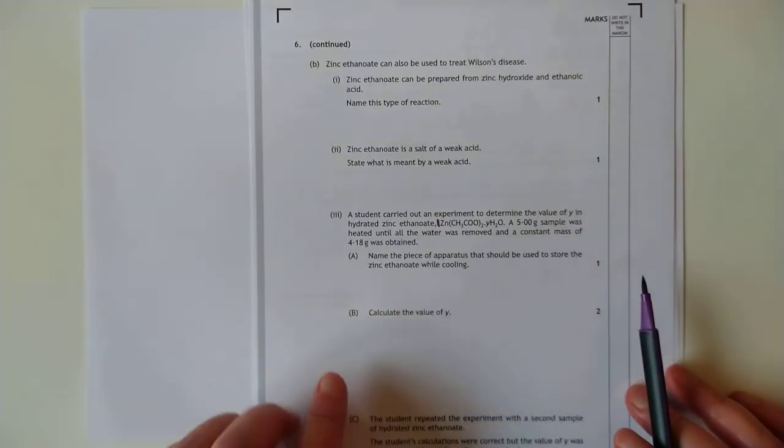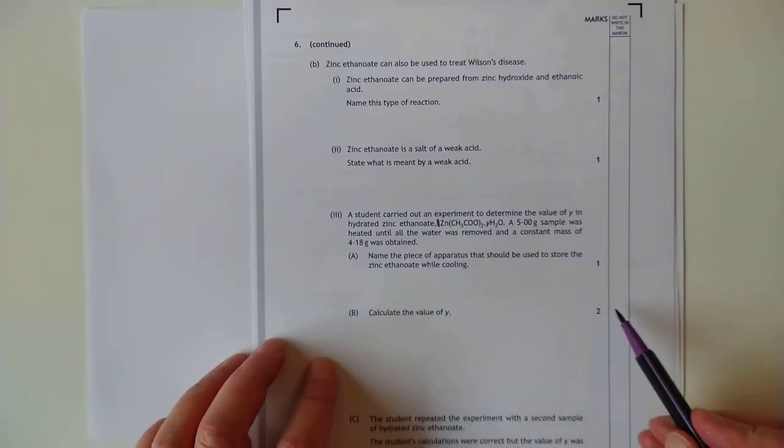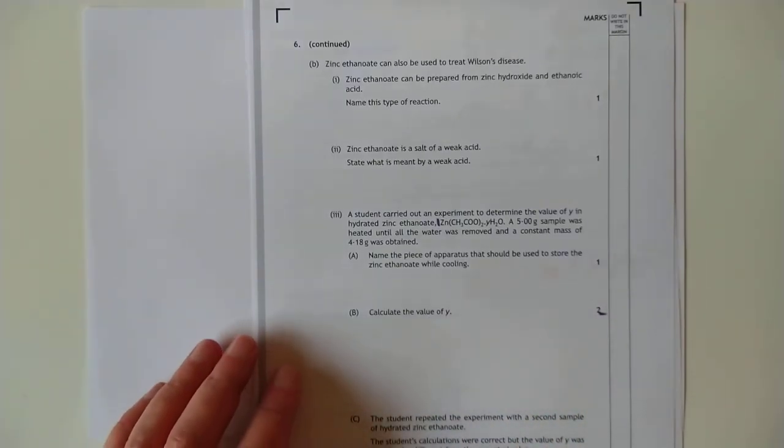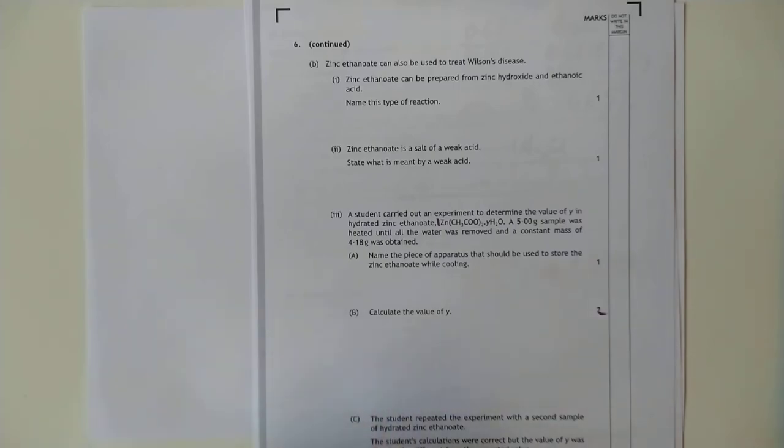Duh. You put it in the desiccator. And they want the value of Y for two marks. So let's have a quick look at this. What would I do personally? I'm going to pause this video and work out the GFM of zinc ethanoate because I can't be bothered doing it in a live time.